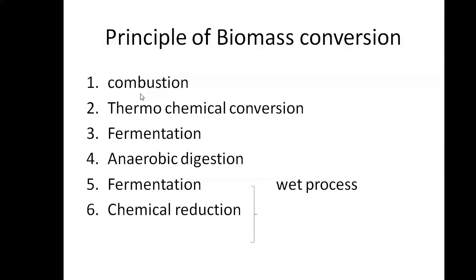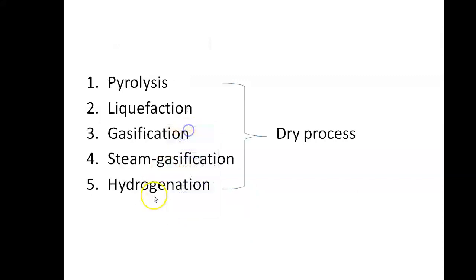The first process is combustion. Second one is thermochemical conversion, fermentation, anaerobic digestion, and chemical reduction. Fermentation and chemical reduction are called wet processes. Next ones — pyrolysis, liquefaction, gasification, steam gasification, and hydro generation — are all called dry processes. Let's see one by one in this video, starting with gasification.